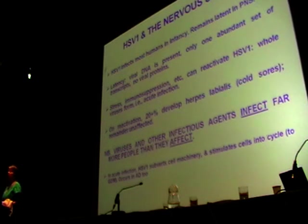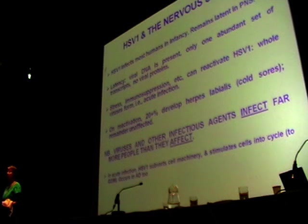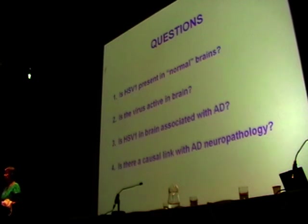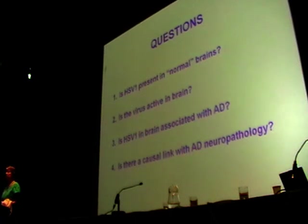I just want to point out an important point which a lot of people don't necessarily think about: viruses and other microbes infect far more people than they actually affect. In other words, a lot of people can be asymptomatic even though infected. We asked the following questions: firstly, is the virus present in normal brains? Secondly, is it active in brain? Is the virus in brain associated with Alzheimer's disease features? And is there a causal link with neuropathology?